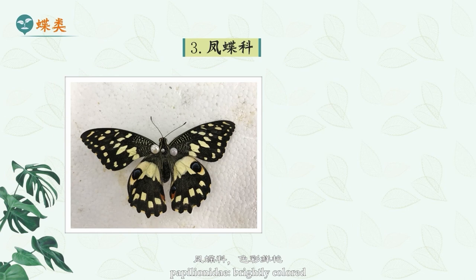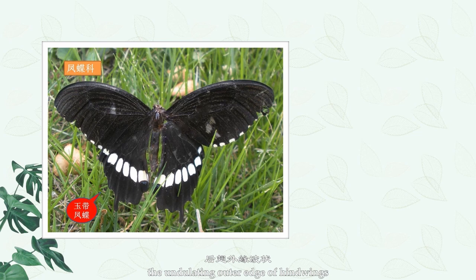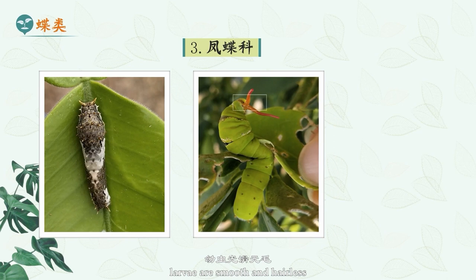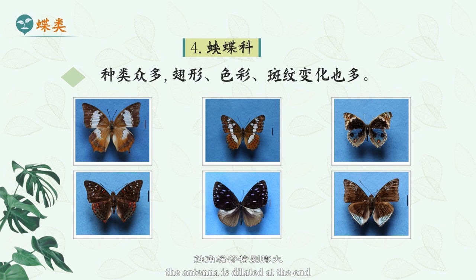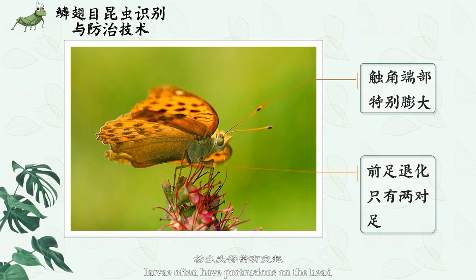Papilionidae: brightly colored, large body with wide wings, triangular forewings, undulating outer edge of hind wings, anal angle often with caudate protrusions. Larvae are smooth and hairless. On the anterior edge of the prothorax, there is a Y-shaped stink gland that extends when frightened and emits an odor. Nymphalidae: wing markings are bright and varied. The antennae are dilated at the end, and the foreleg is reduced to two pairs of legs. Larvae often have protrusions on the head and paired spines on the body surface.